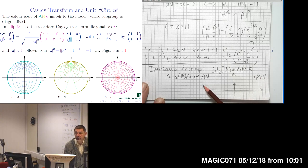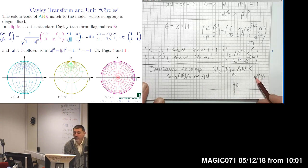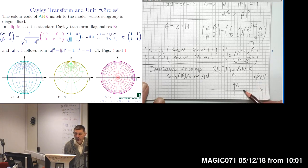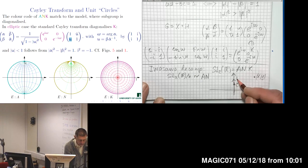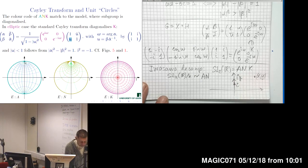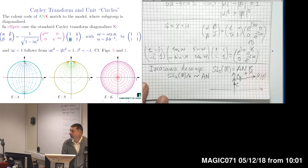Simply transitively means that the group maps one point to another in a unique way — just one transformation maps a given pair of points. We can represent an arbitrary point (x, y) as follows: we first dilate the plane by y to map i to iy, then shift by x. After dilation and shift, we arrive at the point (x, y). This is how the affine group parametrizes the upper half plane.